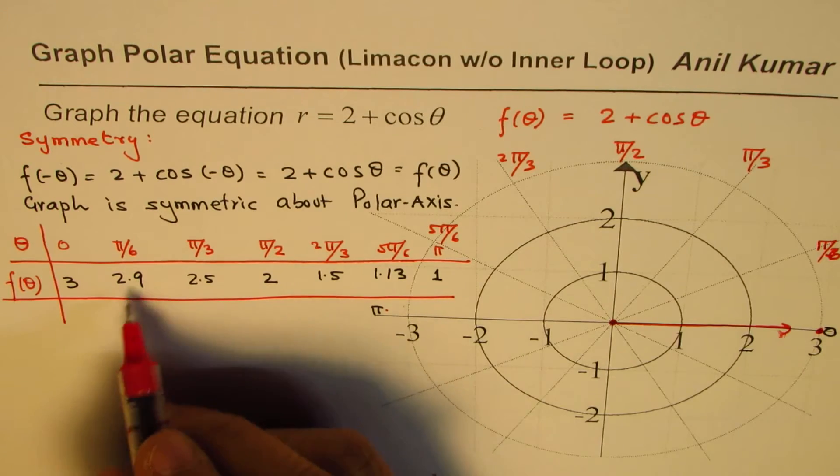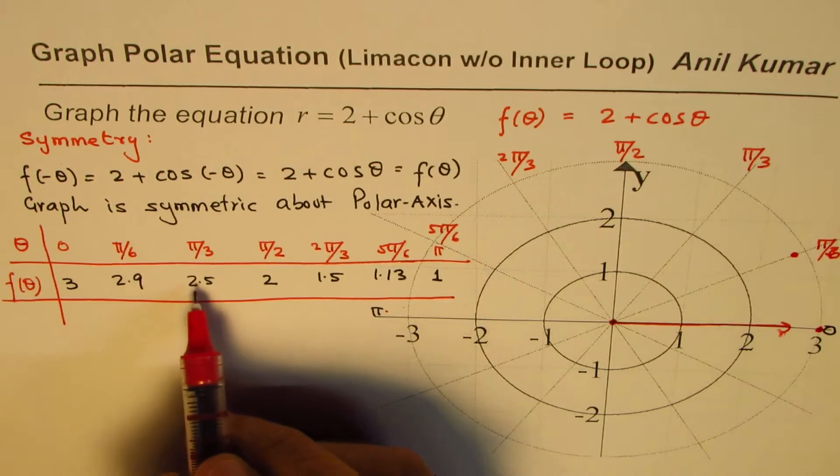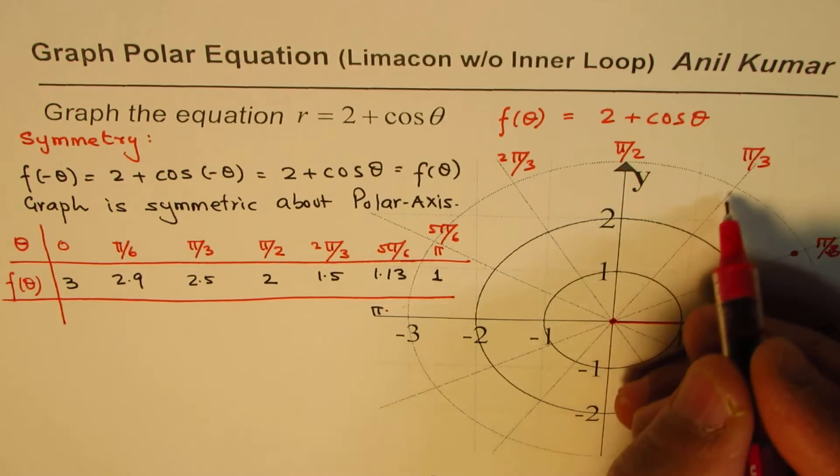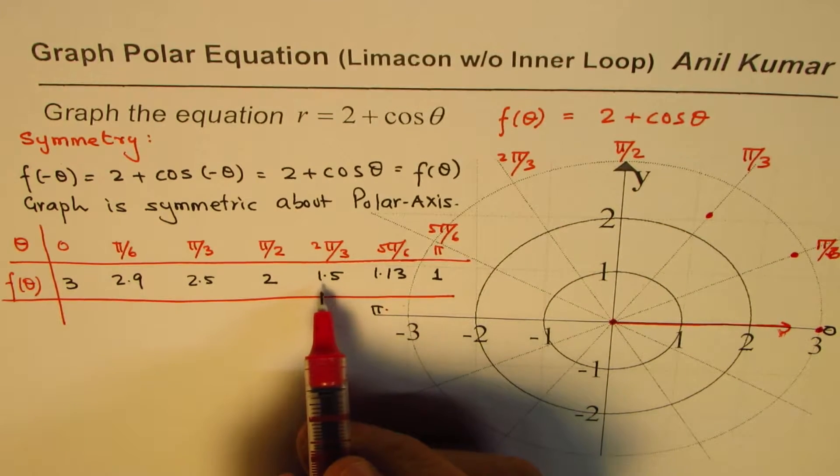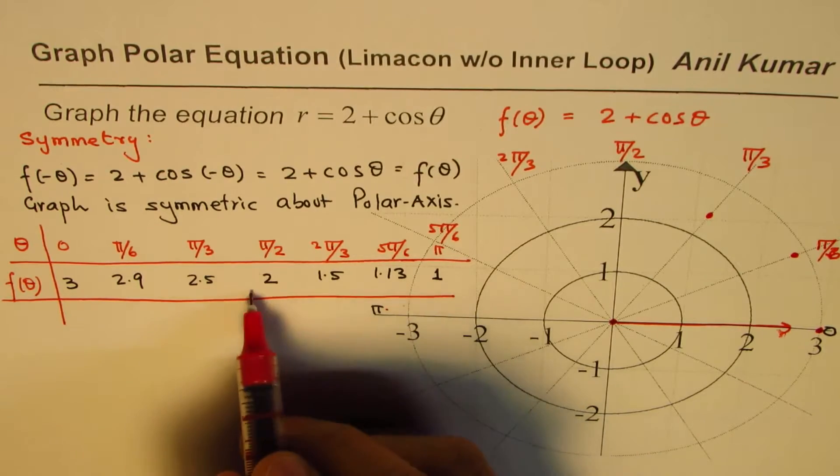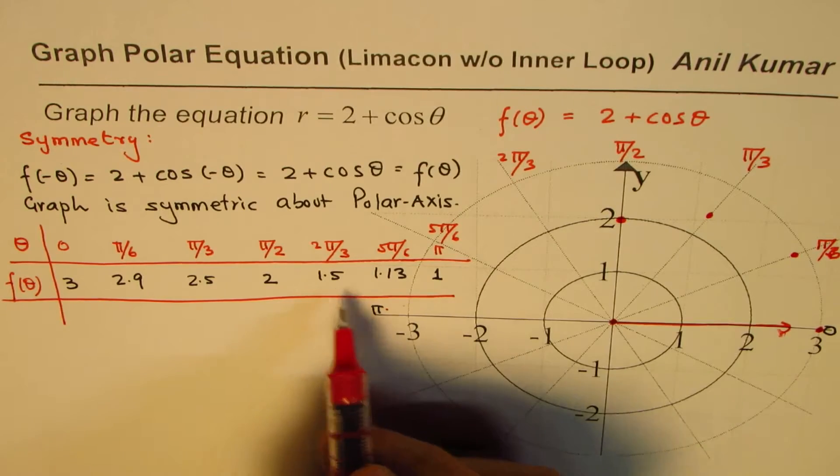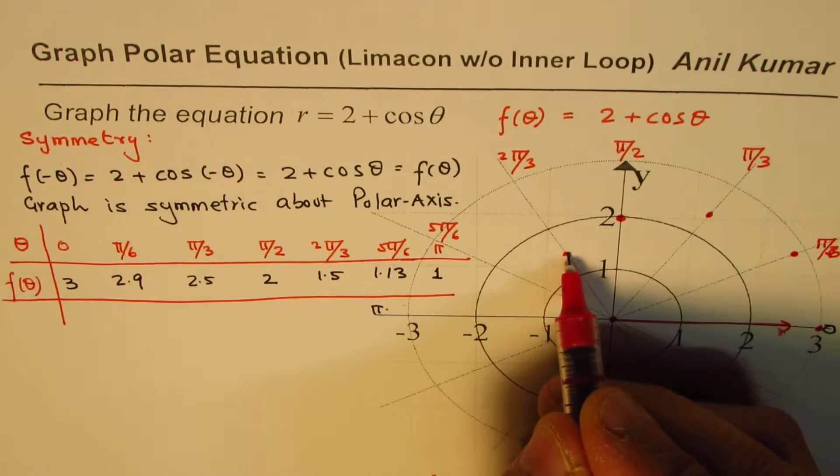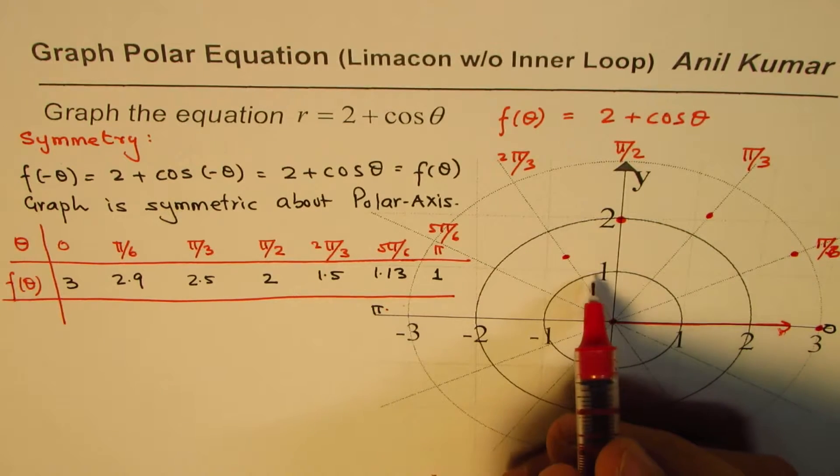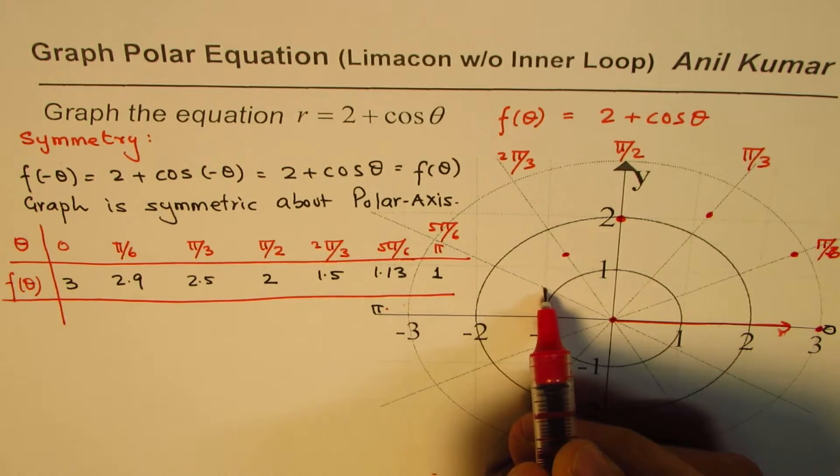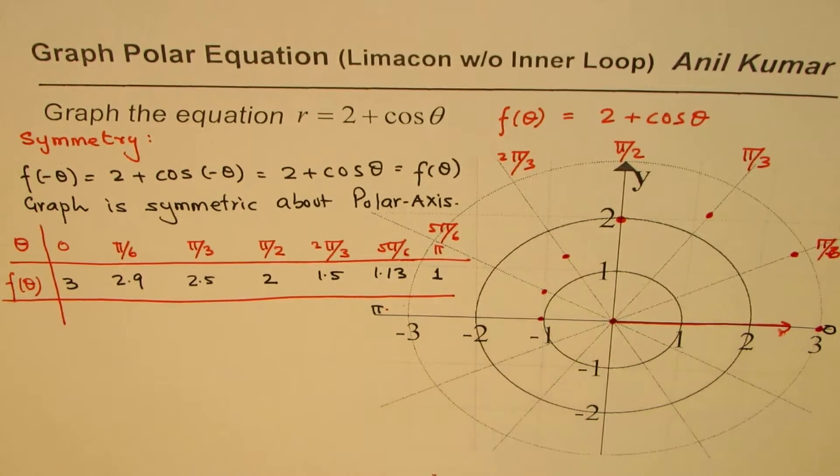π by 6, 2.9. So very close to 3, so that means 2.9 is here. Then π by 3 is 2.5, so midway between these two. And then at π by 2, it is 2. So we get here, π by 2 is 2. And 2π by 3 is 1.5. So midway between here, 1.5. 5π by 6 is 1.13, so close to 1. And then we get the value at 1, at 1.